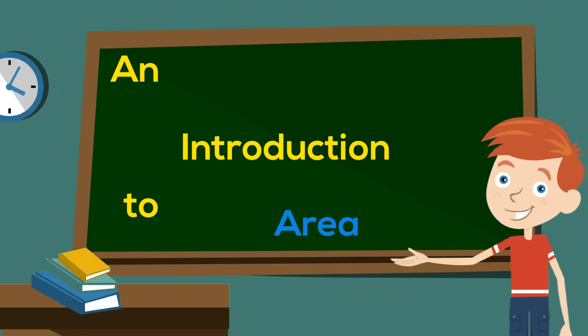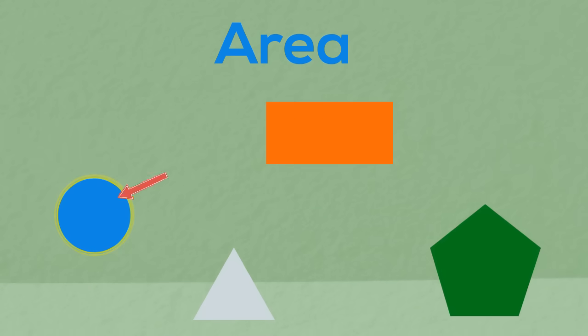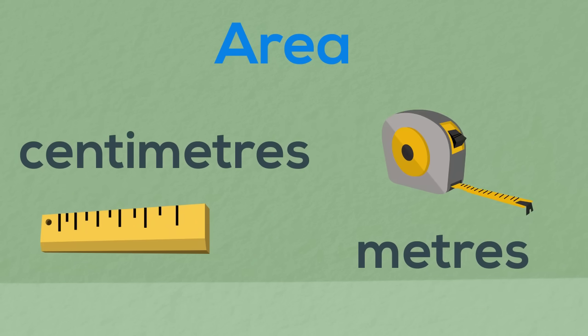An introduction to area. Area is the space inside a 2D shape. We can't use units such as centimetres or metres because they only measure distances in a straight line.